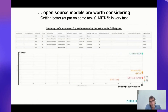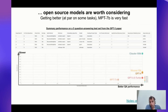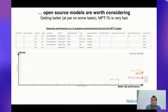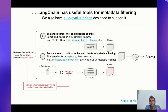Open source models are very much worth considering. Mosaic's MPT-7B, for example, is quite fast — kudos to them on the inference work. I've also seen very good results from Vicuna, which we host on Replicate. You can play with both of these in Auto Evaluator. For retrieval-augmented generation in particular, you may not need a massive model — some of these smaller open source models can be sufficient.